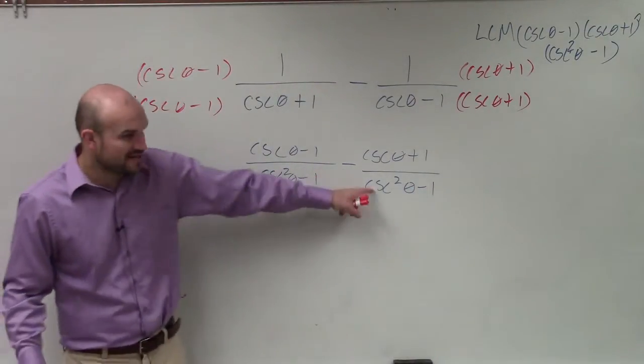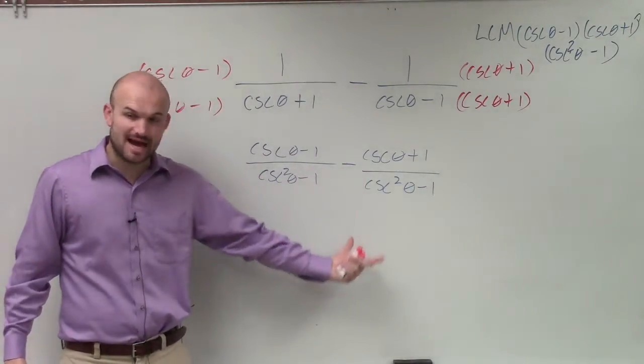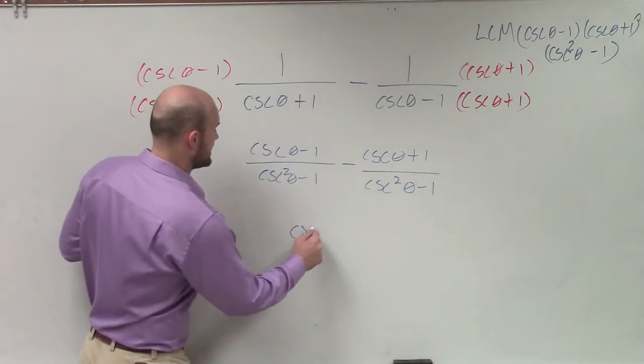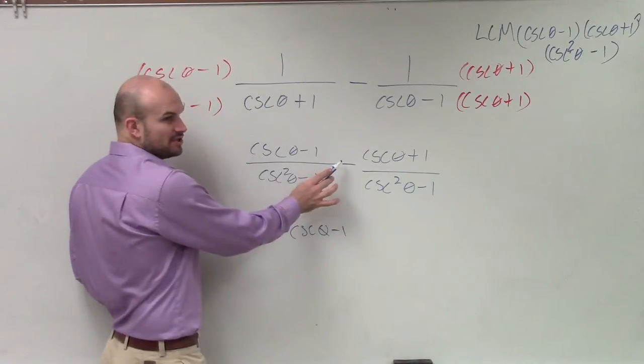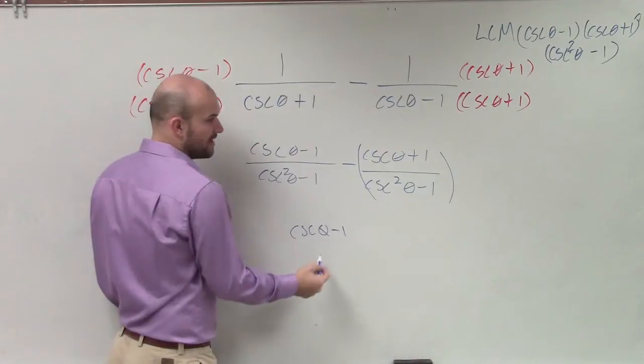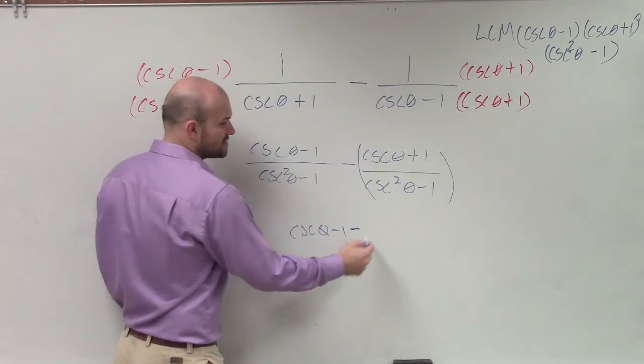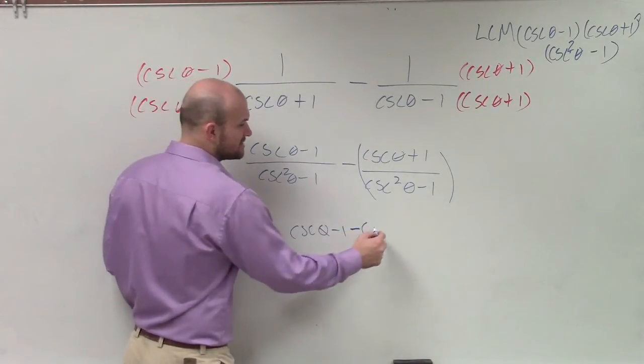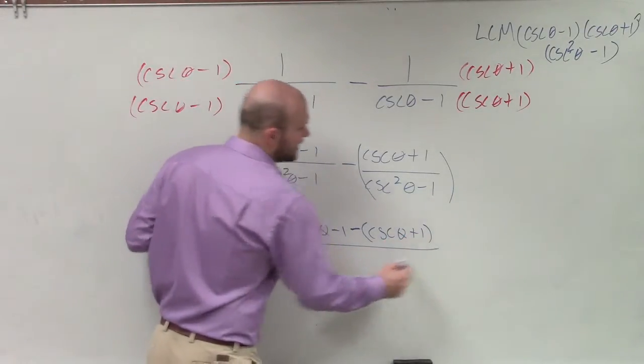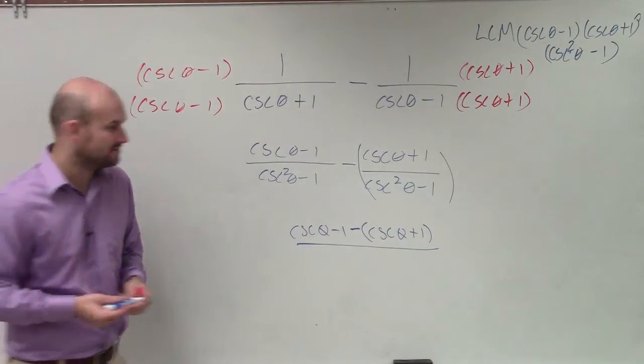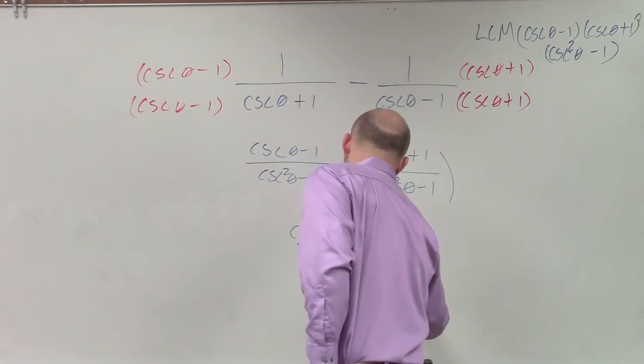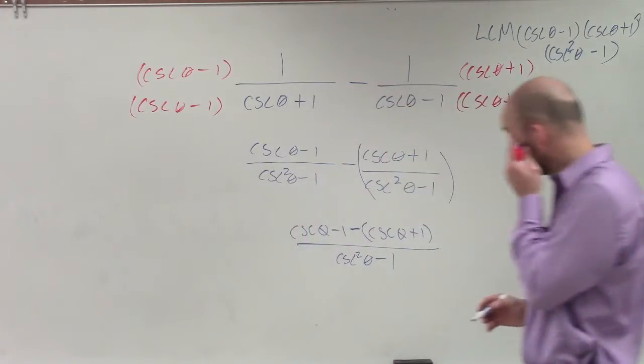Now, I have a rational expression with the exact same denominator. I can combine them. And so I'll have cosecant of theta minus 1. Now, make sure when you subtract this, you subtract the whole term. So what I'm going to do is leave the subtraction sign outside my parentheses, cosecant of theta plus 1, just to make sure that I don't make any mistakes when I'm subtracting. And that's going to be all over cosecant squared of theta minus 1.